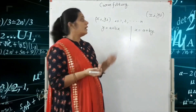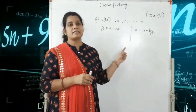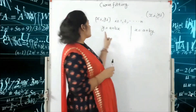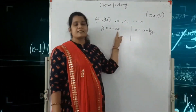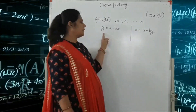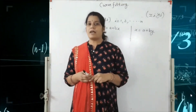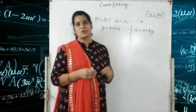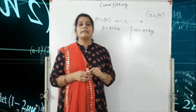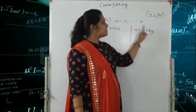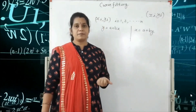If our question is given in the format of X is equal to A plus BY, then we use that type of Straight Line Equation. In the equation Y is equal to A plus BX, X is the independent variable and Y is the dependent variable. If we put different values of X, then we have different values of Y. In the equation X is equal to A plus BY, Y is the independent variable and X is the dependent variable.